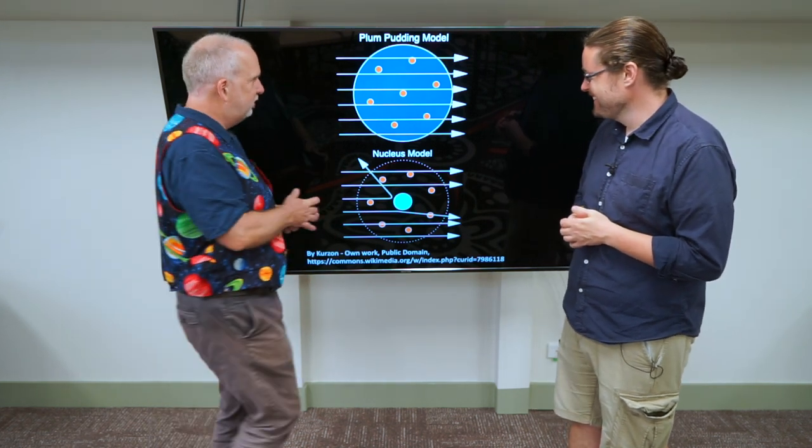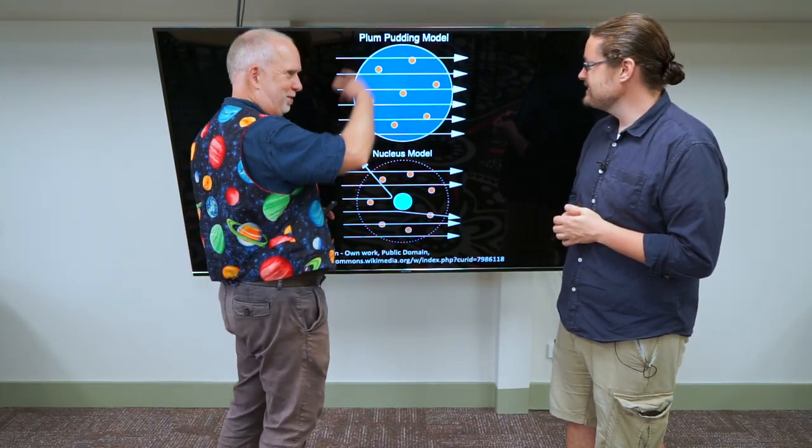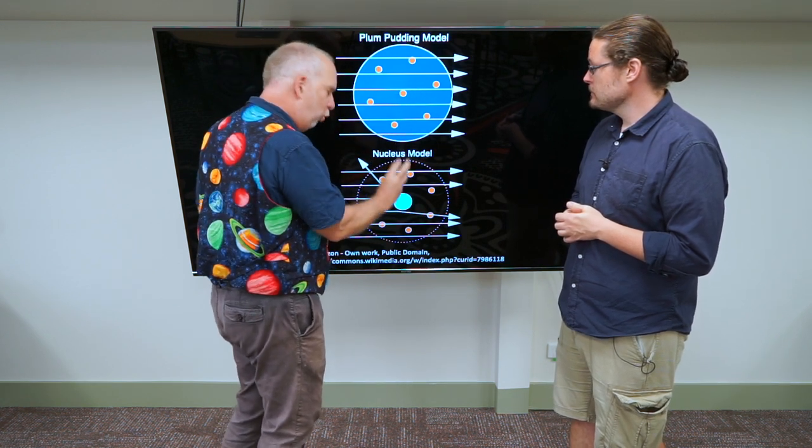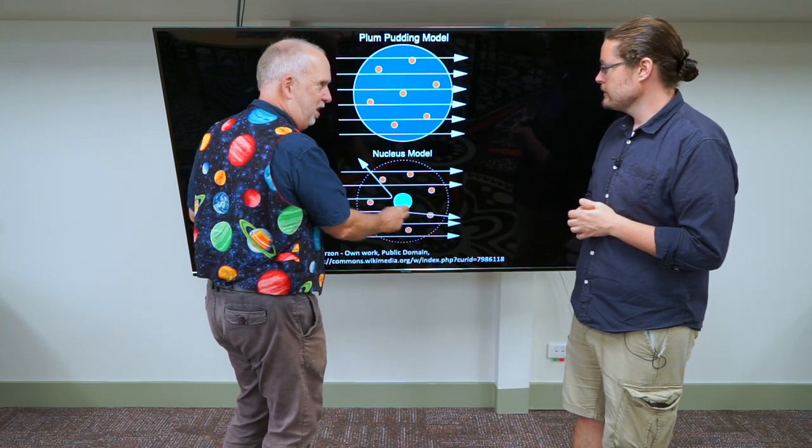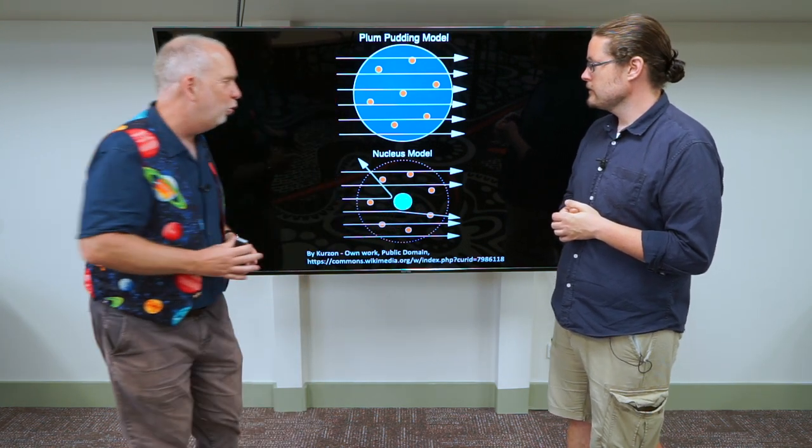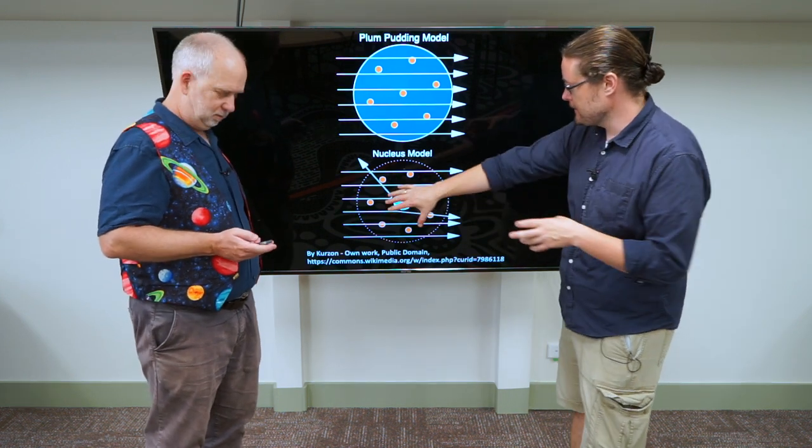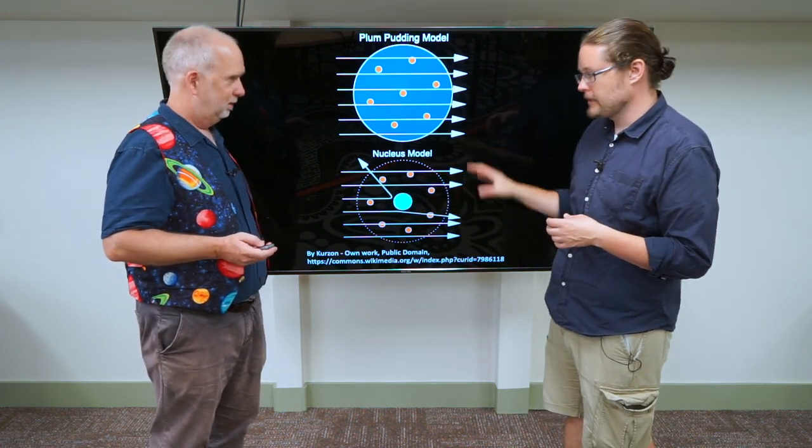But it did, and so that meant that instead of the chocolate chip, the cookie being spread positive charge everywhere, all the positive charge had to be compressed into a really small region in the middle. So it was all condensed, positive charge, and then you get these negative charges on the outside.